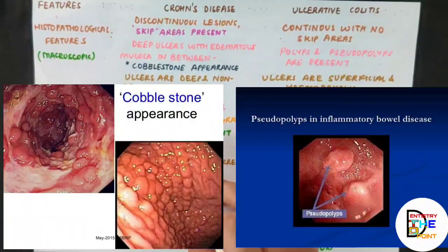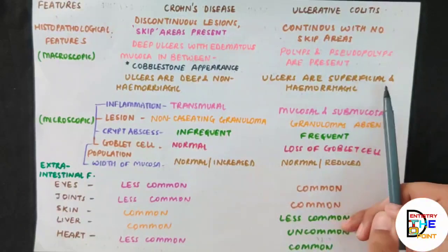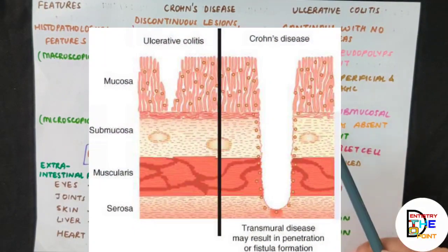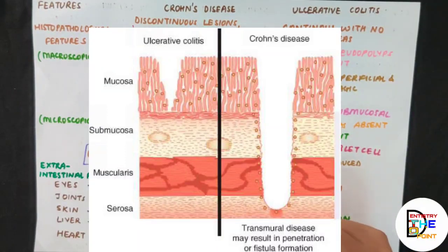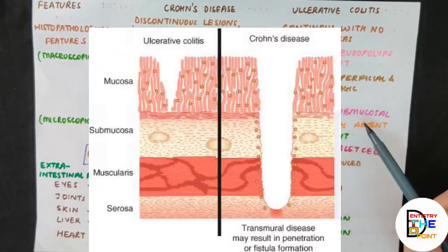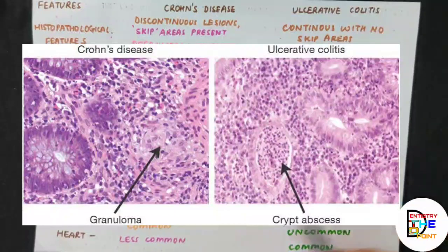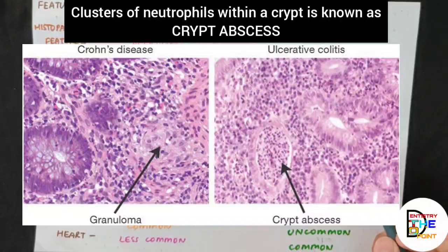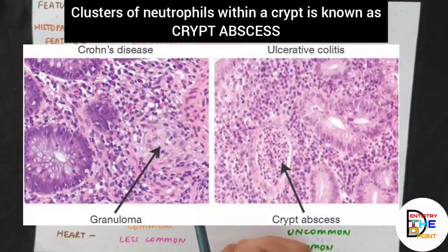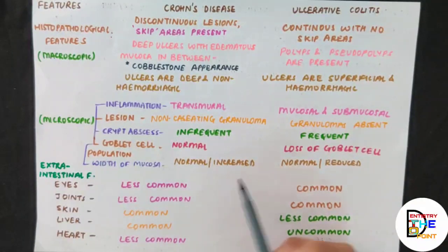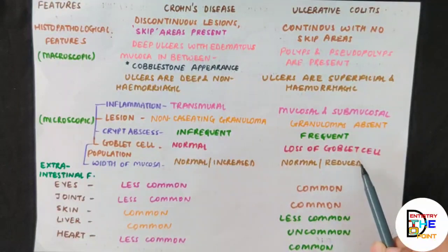Microscopically, the infection in Crohn's disease is transmural — occurring across the entire wall of the organ — while in ulcerative colitis it is limited to the mucosa and submucosa. The lesion in Crohn's is a non-caseating granuloma, while granulomas are absent in ulcerative colitis. Crypt abscesses are infrequent in Crohn's but frequent in ulcerative colitis. Goblet cell population is normal in Crohn's but lost in ulcerative colitis. Mucosal width is normal or increased in Crohn's, but normal or decreased in ulcerative colitis.